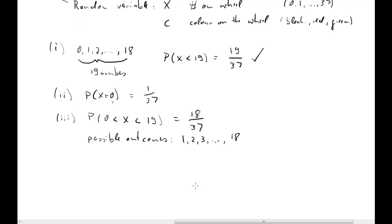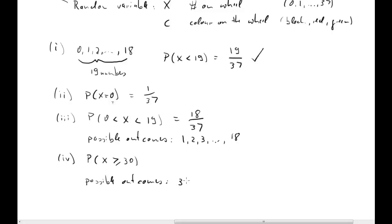Fourth, the probability that X is larger than or equal to 30. The possible outcomes are 30, 31, and so forth, all the way to 36 — the largest possible number. These are seven numbers, therefore the probability is 7 over 37.